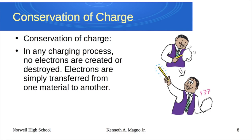And this is the idea of conservation of charge. Any charging process, no electrons are created or destroyed. They're just transferred from one material to another. So if you take like an amber rod and you rub it with a piece of fur, you're going to steal some electrons from that piece of fur and you're going to get a negatively charged amber rod.